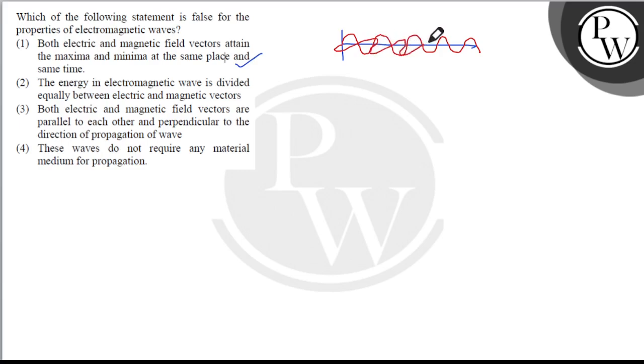Attain the energy in electromagnetic wave is divided equally between electric and magnetic vectors. This statement is completely correct because electric component energy is ½ ε₀ E_rms² is always equal to ½ B_rms² upon μ₀.